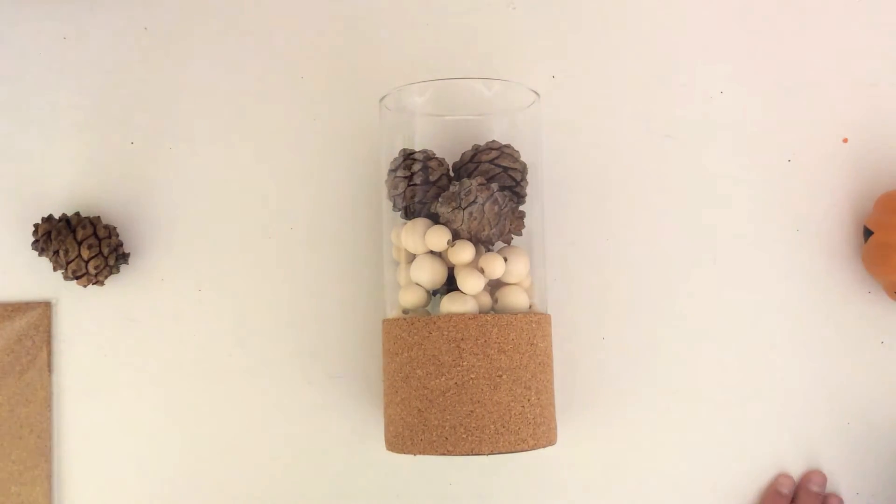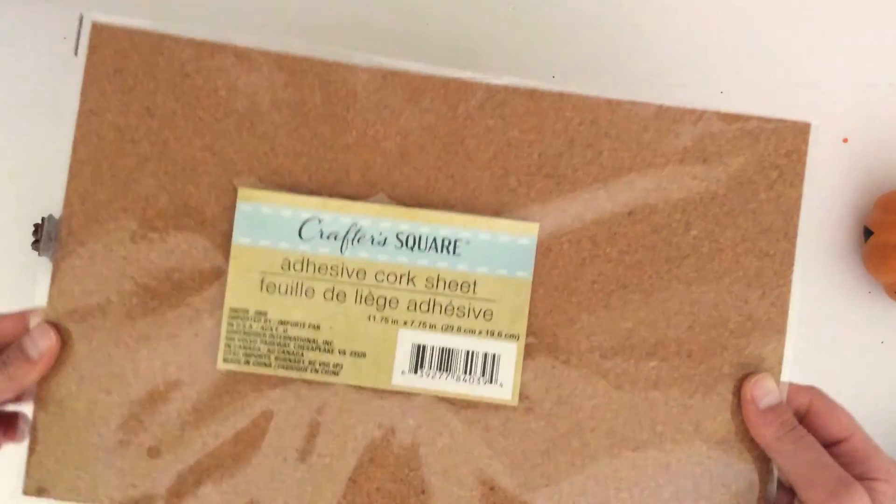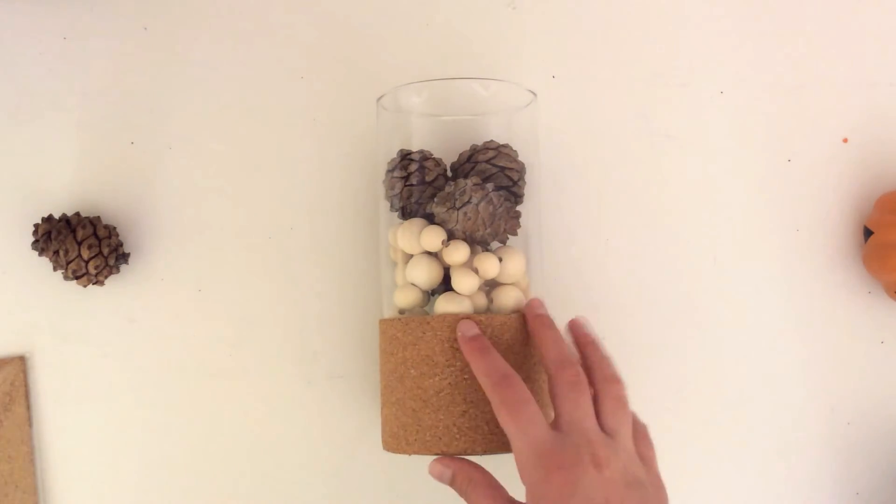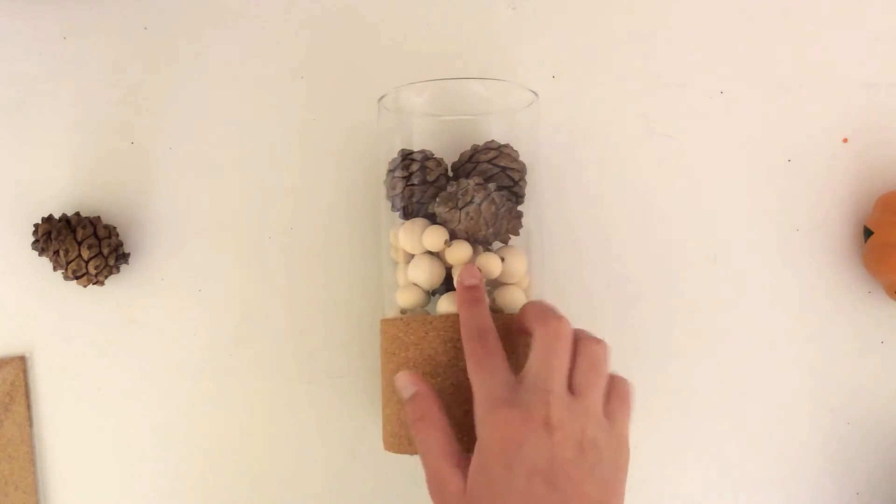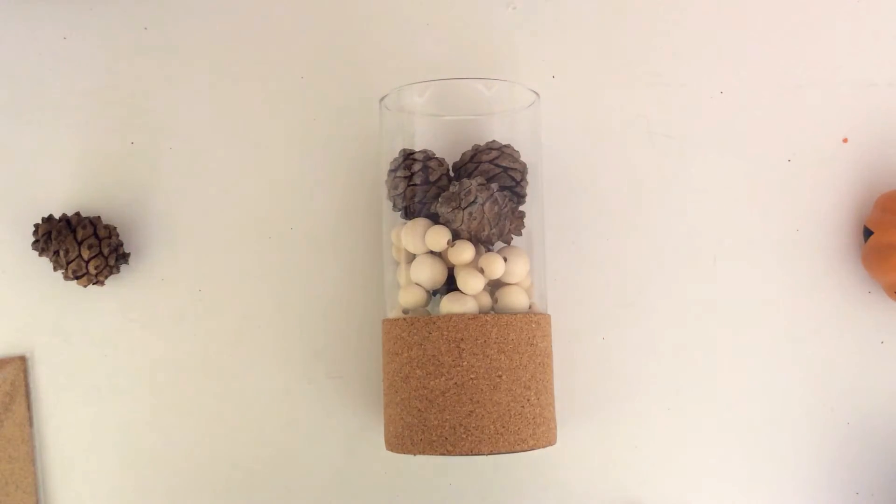So if you just want to recap the steps: use this adhesive cork sheet from Dollar Tree, or you'll probably find it in other places as well. Cut it, stick it on, string some wooden beads, put it in, and then just put in some pine cones or any decoration you'd like.